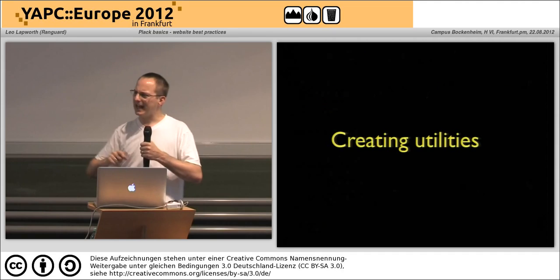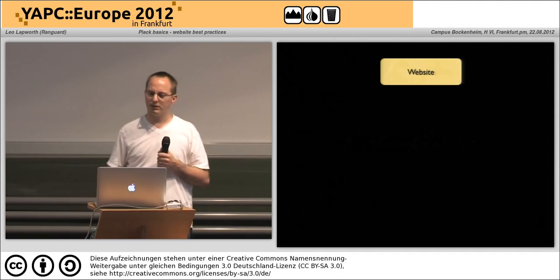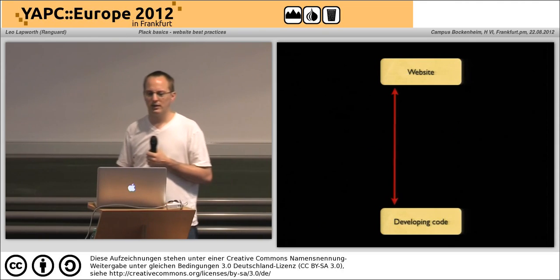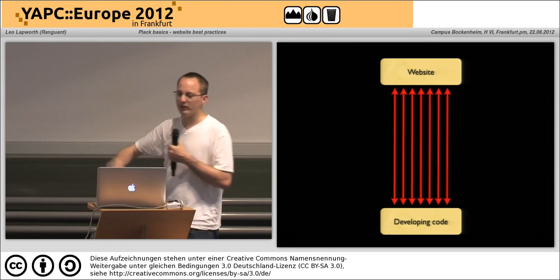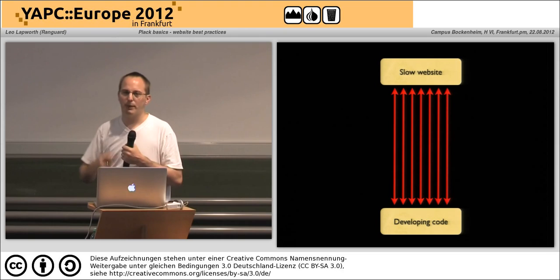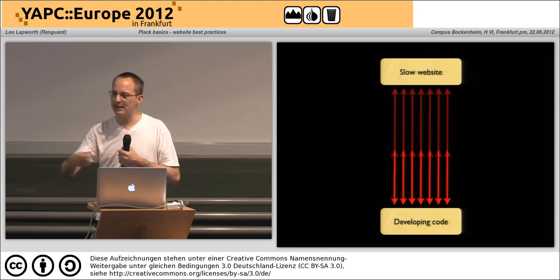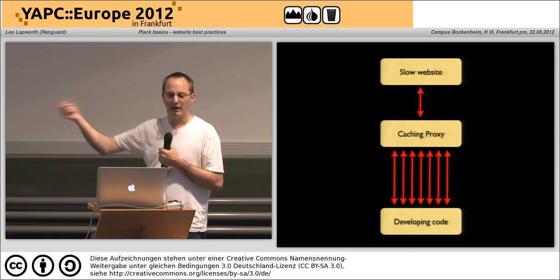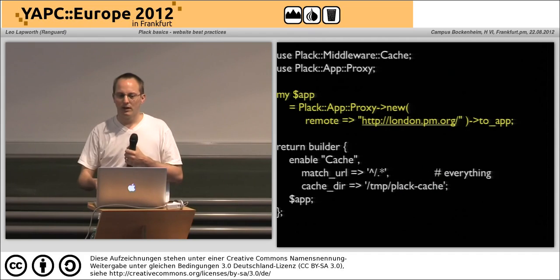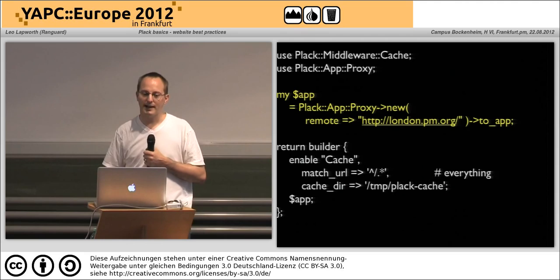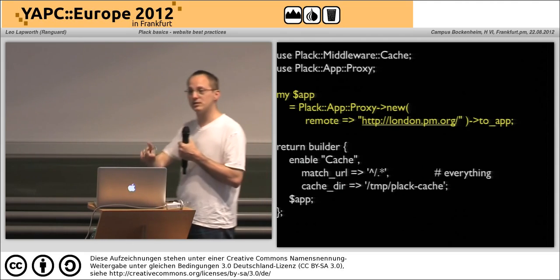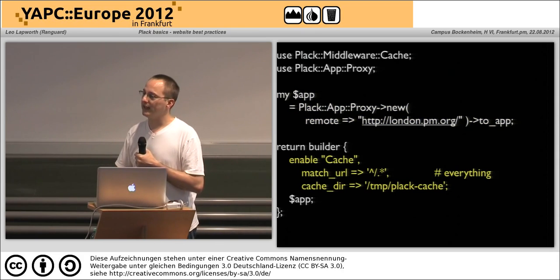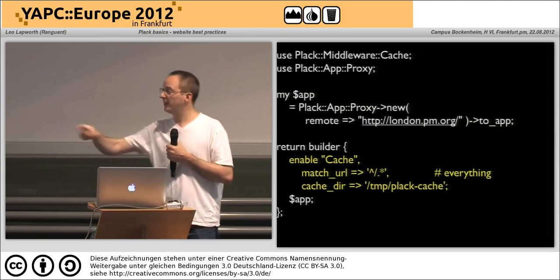You can also start plugging all this stuff together in very interesting ways — for example, a caching proxy. At work we were talking to a government website that was really slow. As we were developing we kept making the same requests repeatedly, which was painful. We thought: how can we stick a proxy in the middle so it fetches the content once but lets us keep developing against that cached version?